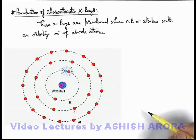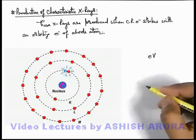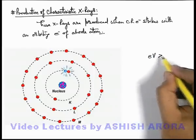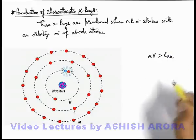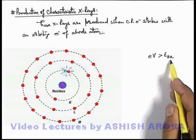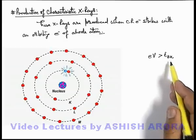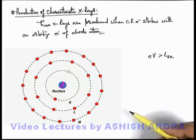And if the energy of the external cathode ray electron — here we can write it as eV, which is the kinetic energy of this cathode ray electron — if it is more than the binding energy of the K-shell electron, here written as E_bk, which is the minimum energy required to knock out an electron from the K-shell, then the electron will be knocked out by the cathode ray electron after collision and a vacancy is created in the K-shell.